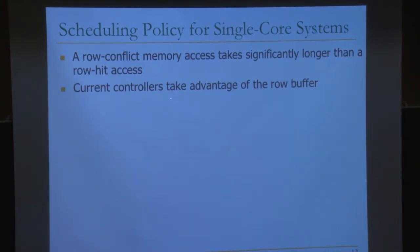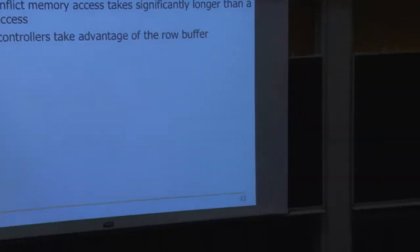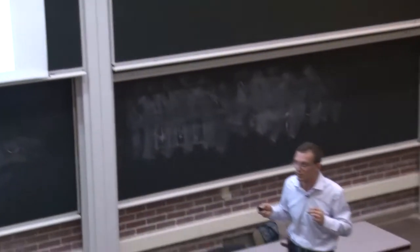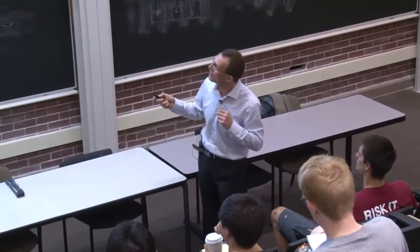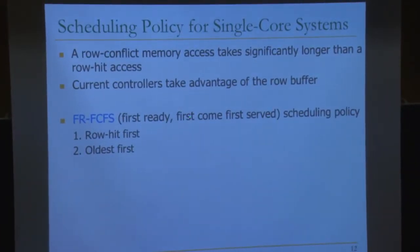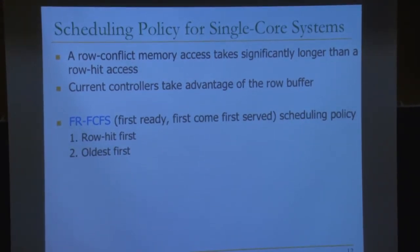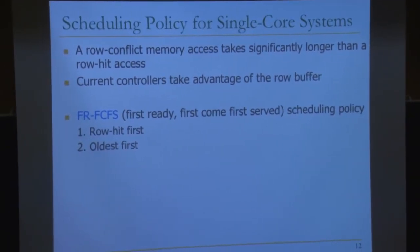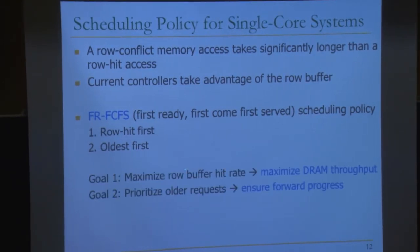Current controllers take advantage of this fact. They employ a commonly used policy called first-ready, first-come, first-served scheduling, which prioritizes row hit requests over others, and older requests all else being equal. There are two goals: one is to maximize row buffer hit rate, which maximizes DRAM throughput; the second is that by prioritizing older requests you ensure forward progress — which is different from fairness, as we will see.